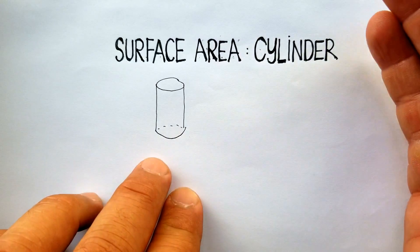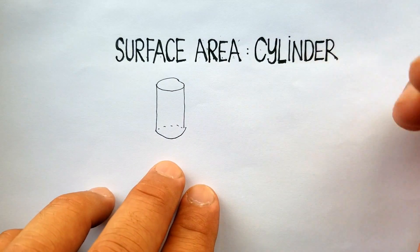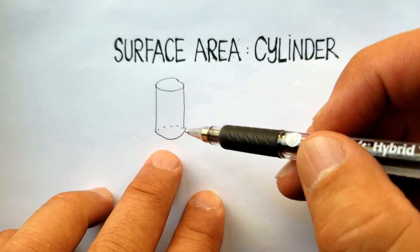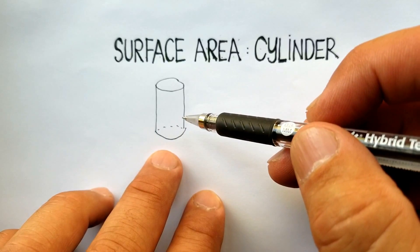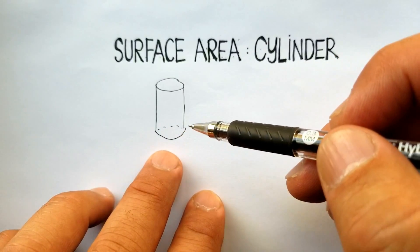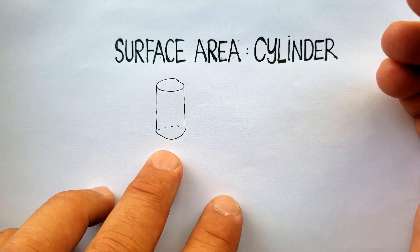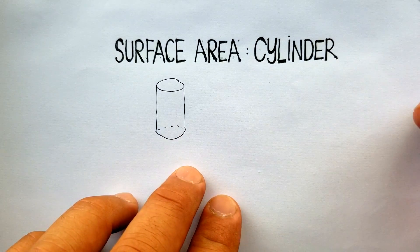Rather than just give you the formula to memorize, let's just think this out a little bit. How would I calculate the surface area of a cylinder given what I know about circles and rectangles and those kind of basic shapes?